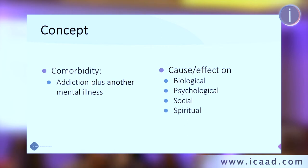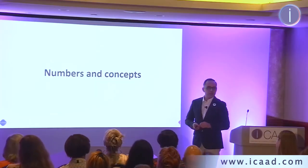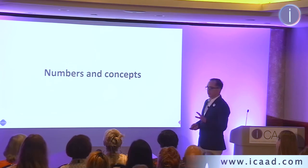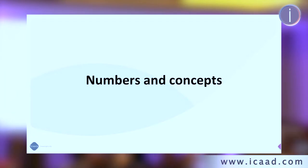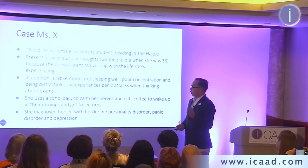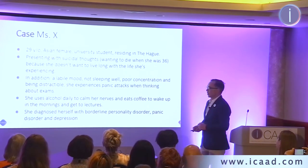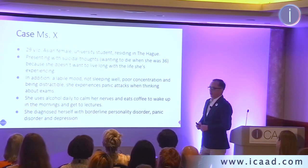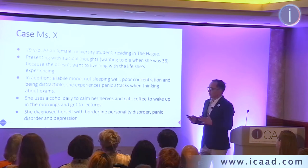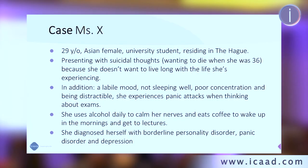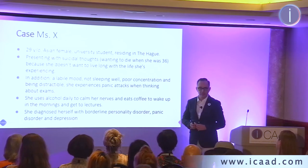Looking at the numbers — I'll stick to three slides on epidemiology to avoid boring you. To make it more bearable, I've brought in a real case I treated, whom I call Mrs. X, with informed consent. Mrs. X is a 29-year-old Asian female university student, a brilliant architecture student living in The Hague. She presented with suicidal thoughts. She was suicidal in the sense that she said she only wanted to live until 36 because she didn't want the life she had by that time.